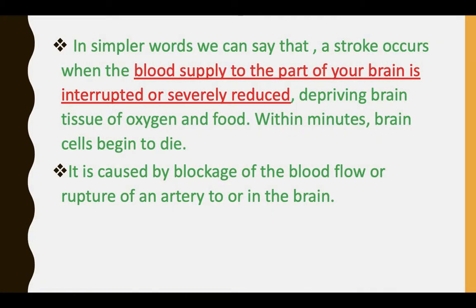In simpler words, a stroke occurs when the blood supply to part of your brain is interrupted or severely reduced, depriving the brain tissue of oxygen and food. Within minutes, brain cells begin to die. It is caused by the blockage of blood flow or rupture of an artery to or in the brain.